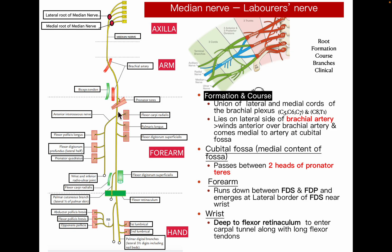The median nerve passes deep to the flexor digitorum superficialis, where it gives off a branch called the anterior interosseous nerve. This nerve supplies the deep muscles of the anterior compartment of the forearm: flexor pollicis longus, the lateral half of flexor digitorum profundus (the medial half is supplied by the ulnar nerve), and pronator quadratus. The anterior interosseous nerve also supplies the wrist and inferior radio-ulnar joint.